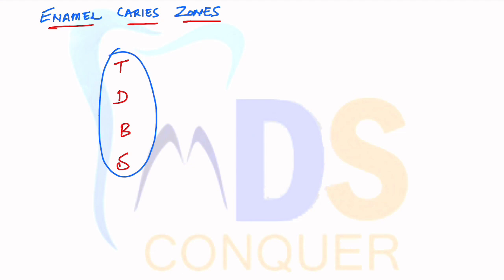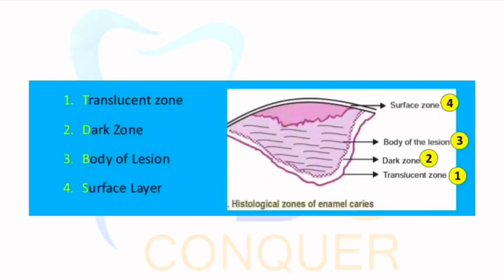So you can remember just with this word: TDBS. What is TDBS? T for Translucent Zone, D for Dark Zone, B for Body of Lesion, S for Surface Layer.